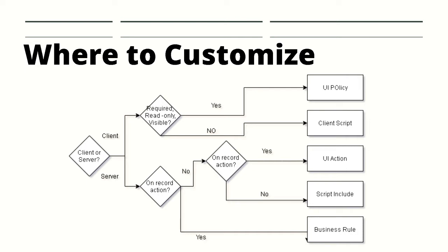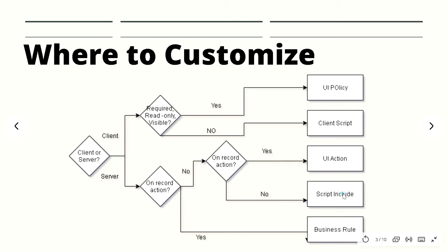If the answer for the original question was server side, you should ask yourself: is it a record action? Do you want to run a script when a record is inserted or updated? If no, ask yourself will this be a button or menu. If yes, you will typically use UI Action. If no, you might use Script Include. If the record action answer is yes, you typically use the Business Rule.